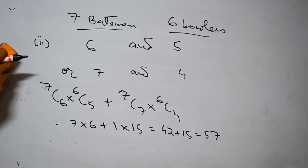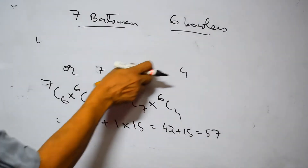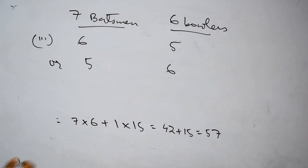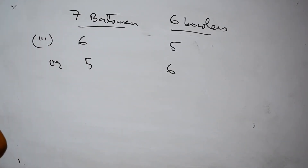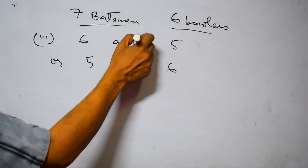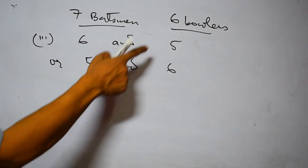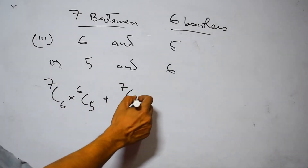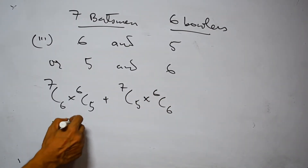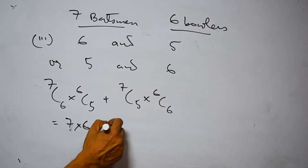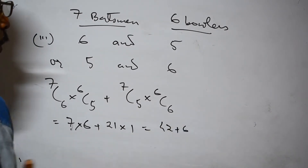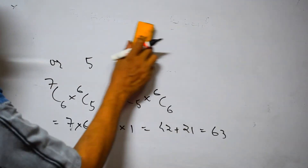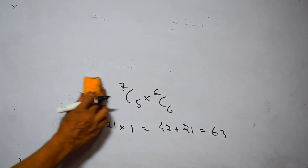The third part: at most six batsmen, meaning no more than six. The cases are: six batsmen and five bowlers, OR five batsmen and six bowlers. We cannot take more than six bowlers since there are only six. The result is 7C6 times 6C5 plus 7C5 times 6C6, which equals 42 plus 21 times 1, giving 42 plus 21 equals 63 ways. In all cases, 'and' means multiply; 'or' means add.